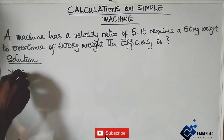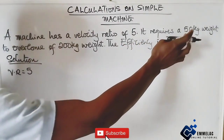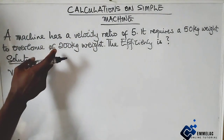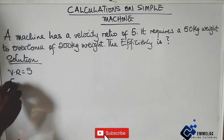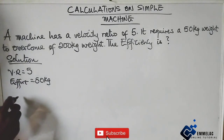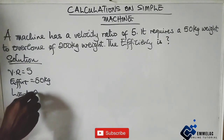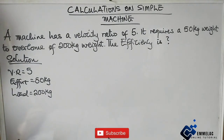We have that the velocity ratio equals 5. It requires a 50 kilogram weight to overcome a force, so we have the effort E as 50 kg and the load as 200 kg. We actually need an effort to overcome a load.